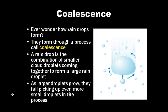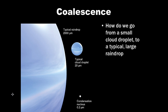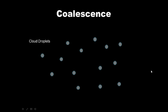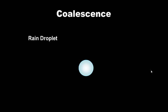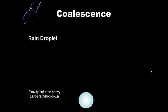Coalescence: ever wonder how a raindrop forms? They form through a process called coalescence. A raindrop is the combination of smaller cloud droplets coming together to form one large raindroplet. As larger droplets grow, they fall, picking up even more droplets in the process. Water is a sticky chemical — the droplets like to stick together and coalesce. Eventually gravity takes over and pulls the heavy, large raindrop down, and you feel it as rain.